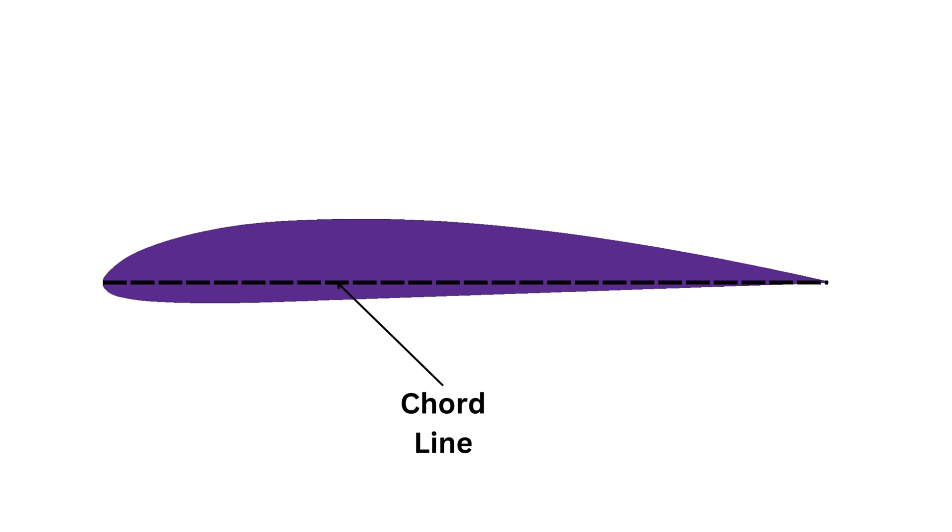The cord line is an imaginary line between the leading and trailing edge. It helps us determine the orientation of the airfoil relative to the flow. The camber line is an imaginary line halfway between the upper and lower surfaces, which represents the average shape of the airfoil. It helps us visualize the curvature of the airfoil.